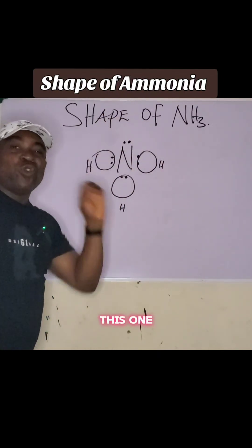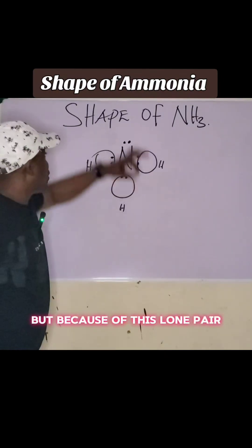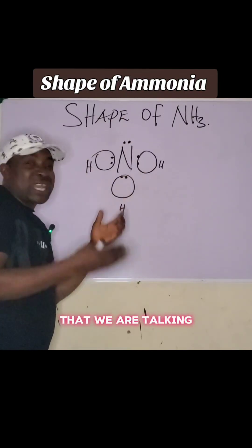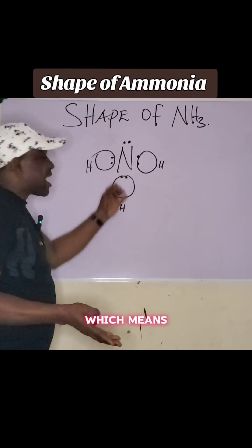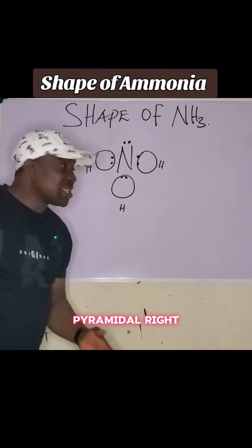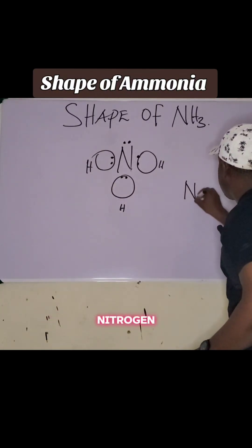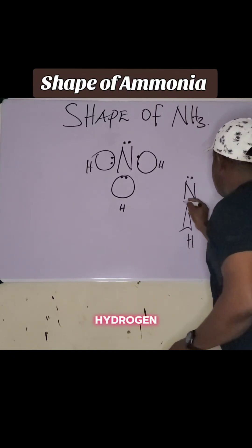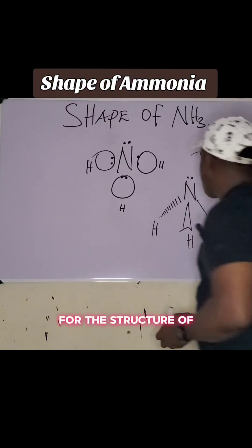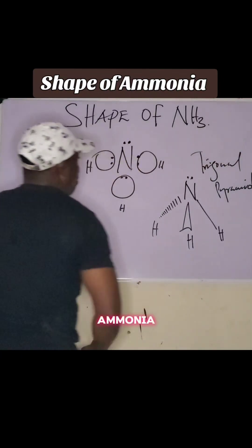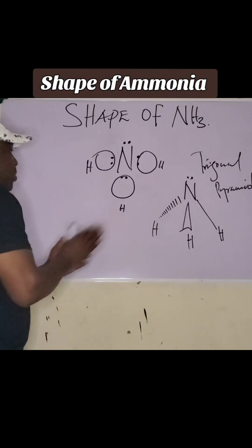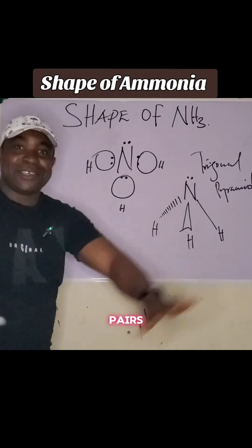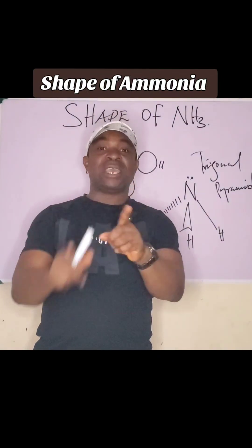The lone pair always affects the structure. Because of this lone pair, no bonding takes place at that position, giving us a trigonal pyramidal shape. So here is nitrogen with the lone pair on top, and the three hydrogen atoms bonded below — the structure of ammonia is trigonal pyramidal, with one lone pair and three bonding pairs.